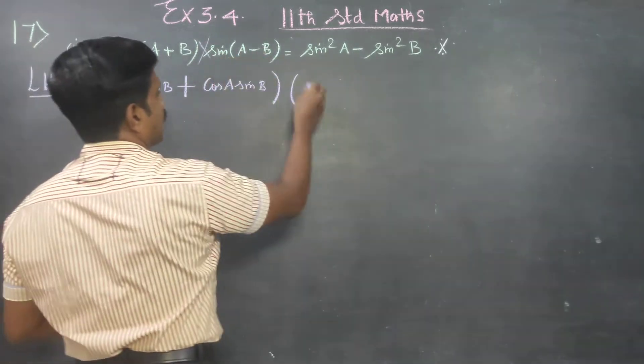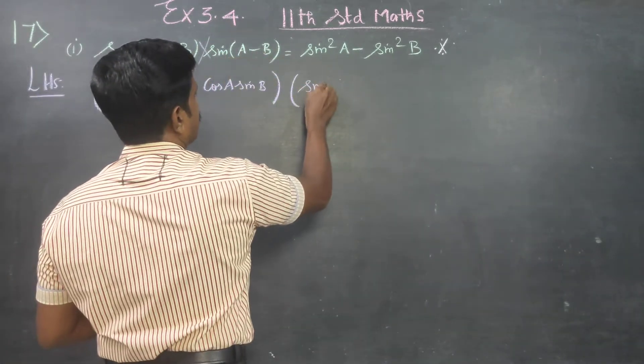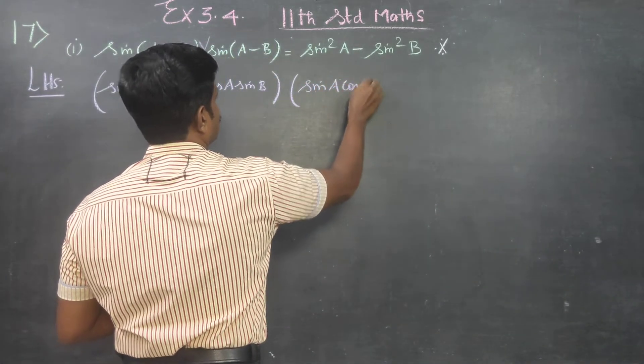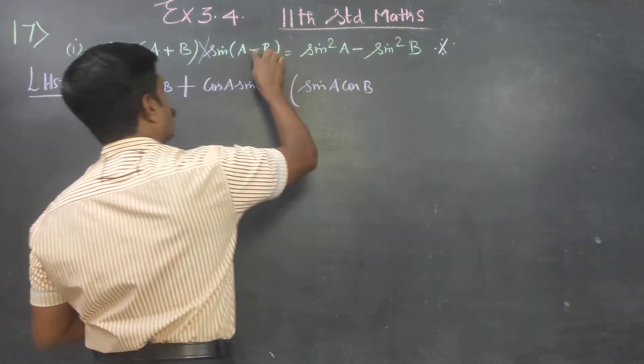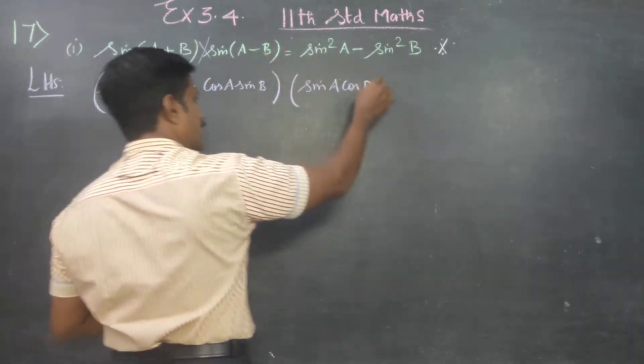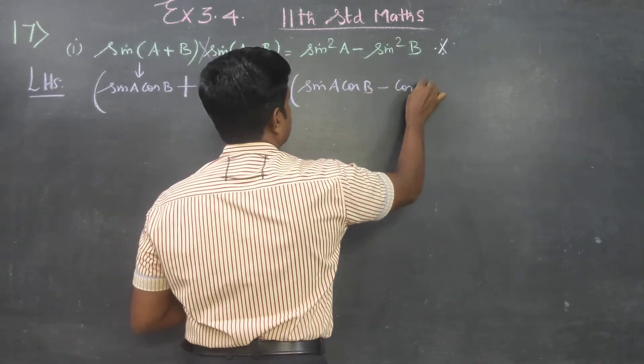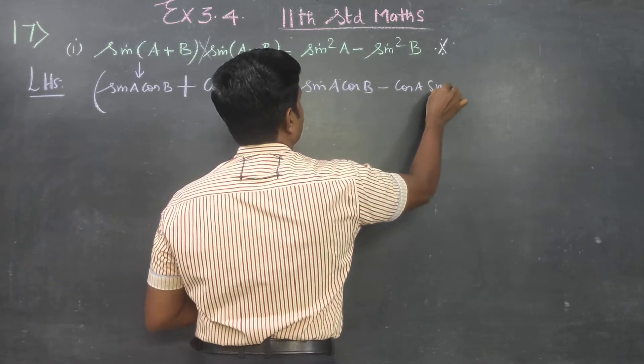Sin(A−B) formula: sinA cosB minus cosA sinB.